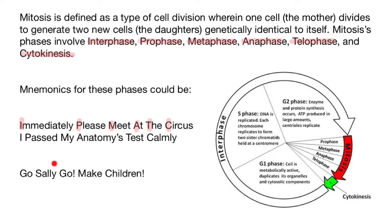As for the next sentence: 'Go, silly, go — make children.' Each first letter again stands for a phase. G stands for the G1 phase, S stands for the S phase, the second Go stands for the G2 phase, Make stands for mitosis, and Children stands for cytokinesis.